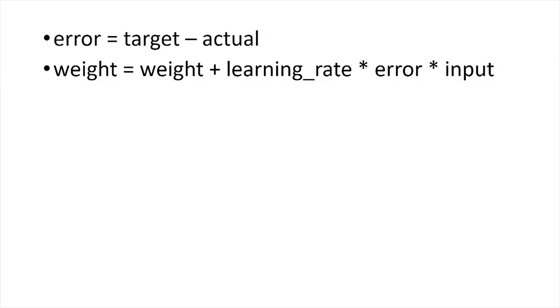So summarizing last episode, you can evaluate the error of an output neuron by subtracting the output from the target output. If you then use the formula weight equals weight plus learning rate times error times input, you can adjust the weights to fit the target output.